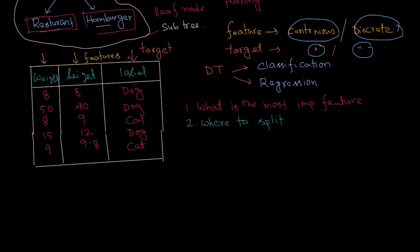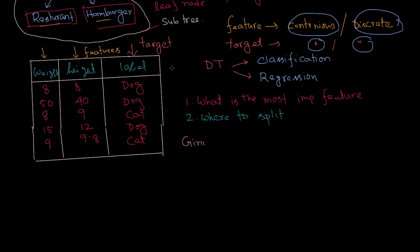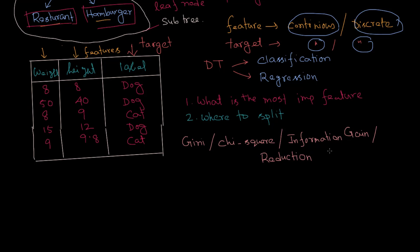There are several algorithms available for determining the best split. One of the most important is Gini, which we'll use in this tutorial. Others include chi-square, information gain, and reduction in variance. We'll discuss all these algorithms, but in this video we'll mainly focus on the Gini algorithm.